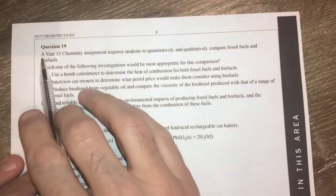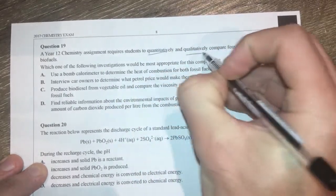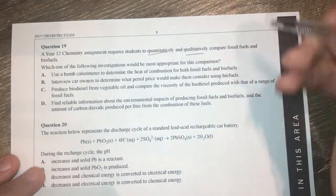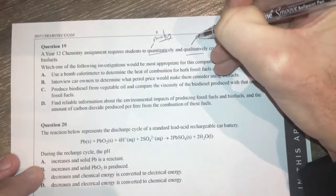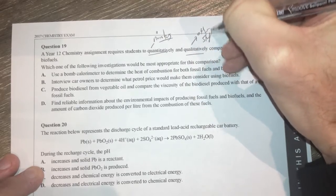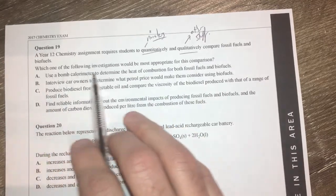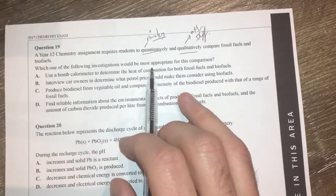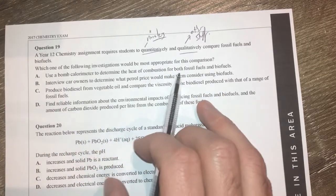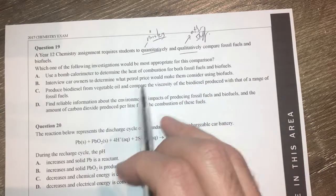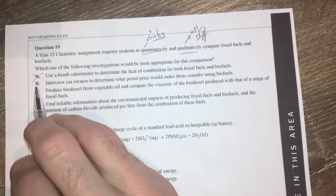Question 19. A year 12 chemistry assignment requires students to quantitatively and qualitatively compare fossil fuels and biofuels. So quantitative means numbers and qualitative just means other stuff, for lack of better terminology. Basically not with numbers. Which of the following investigations would most appropriate for this comparison? Using a bomb calorimeter to determine the heat of combustion for both fossil fuels and biofuels. That's going to give you quantitative analysis because you're going to get numbers out of that but you're not going to get qualitative. So it's not going to be A.